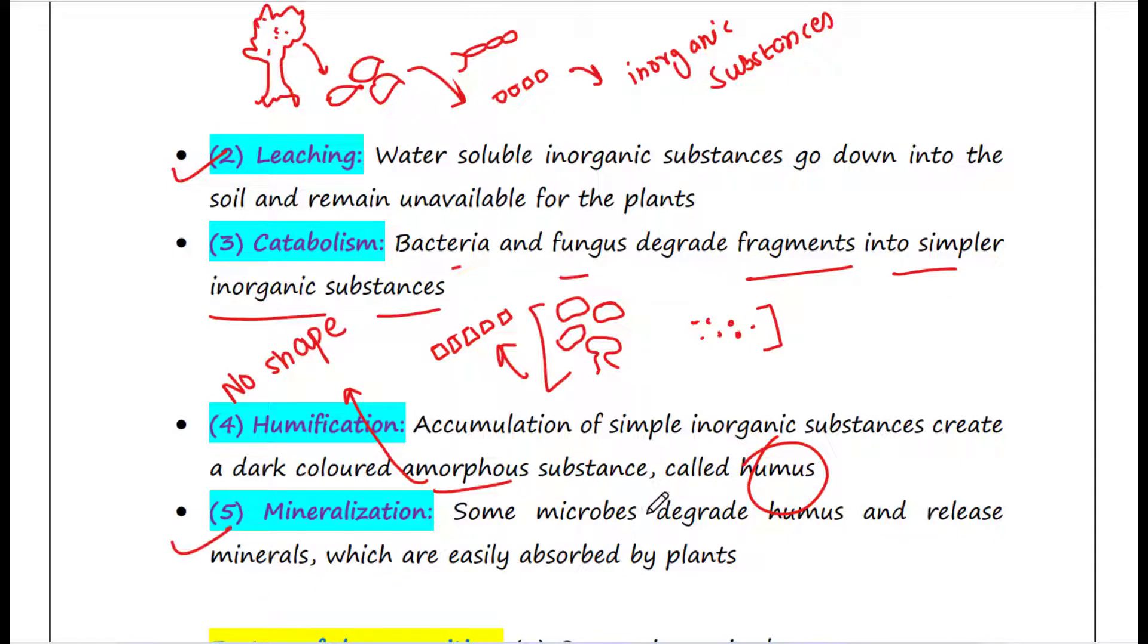Next process is mineralization. Some microbes degrade humus. So humus is now generated and some microbes will act on this humus and release some minerals like carbon, nitrogen, phosphorus, sulfur. These minerals will be easily absorbed by plants. That is called mineralization.